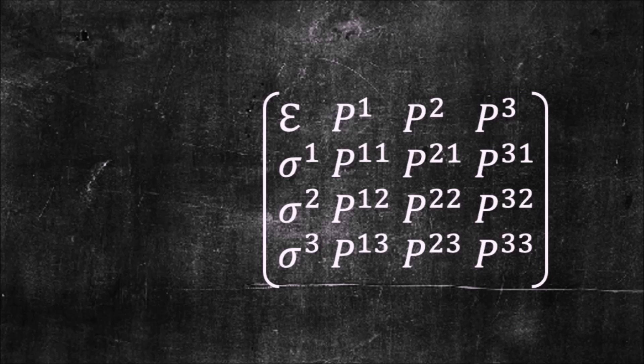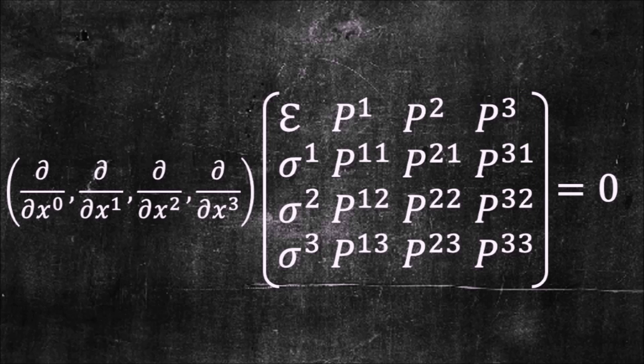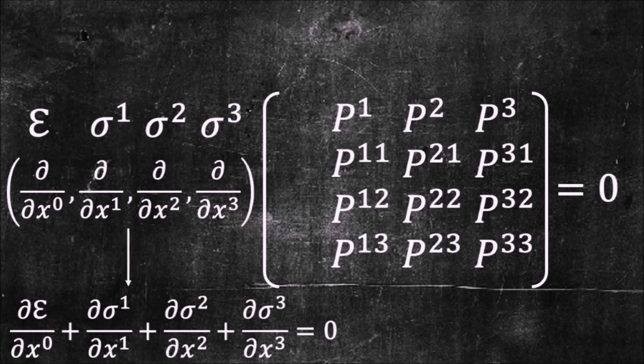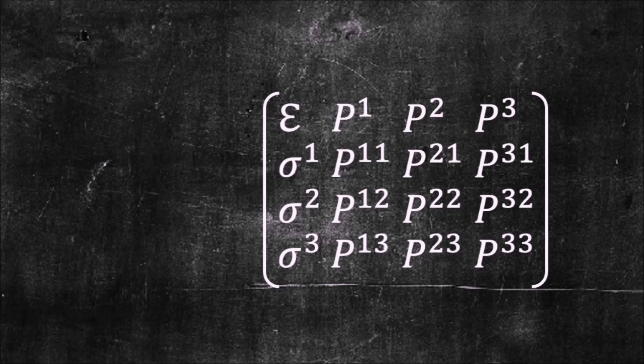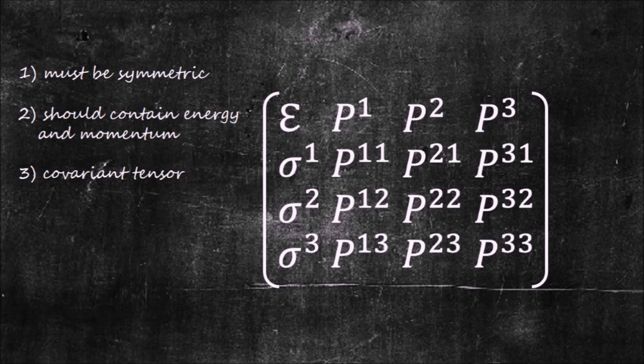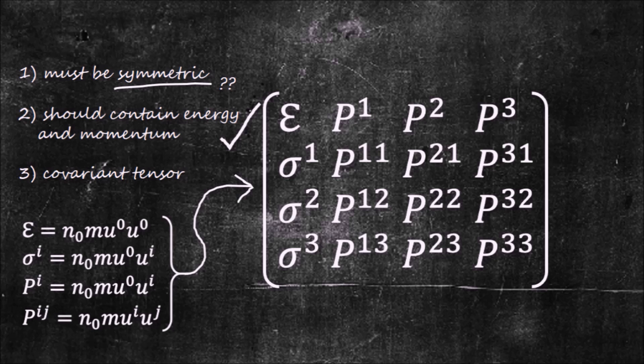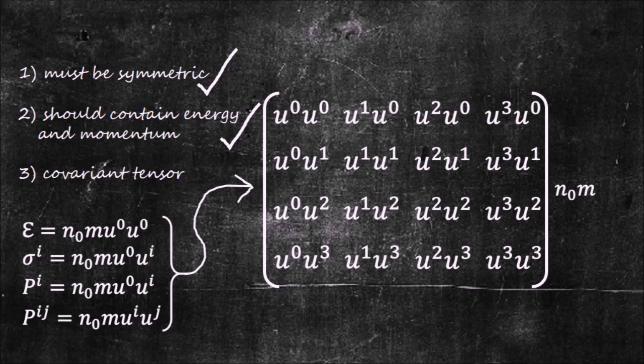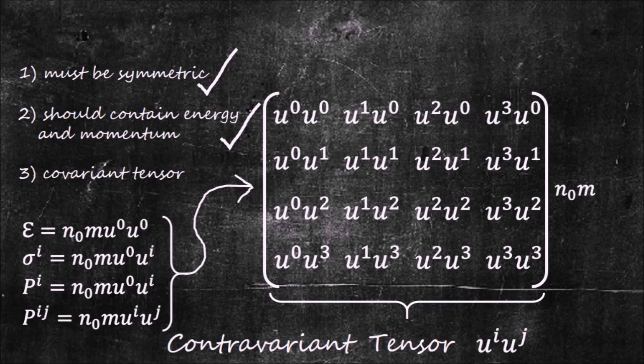The continuity equation can be written in a matrix form. So we have constructed some kind of a matrix. But does it satisfy the three aforementioned criteria? Well, it does contain energy and momentum, so the second criterion is a check. What about symmetry? If we recall that the matrix elements can be expressed in terms of the tangent unit vector, we see that it is indeed symmetric. What's more, now we see that it is also a tensor, because the product U^i U^j transforms like a tensor. It is, however, a contravariant tensor, and we are looking for a covariant tensor. So the last condition is not met.